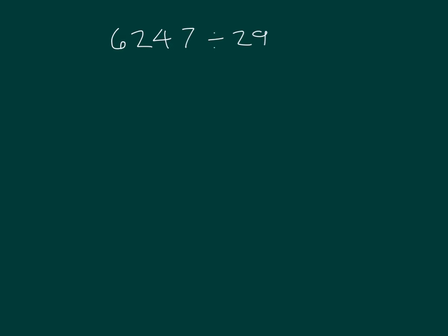Divide sixty-two-hundreds by twenty-nine. Show me how to estimate that. So sixty-two-hundreds divided by twenty-nine — we're looking at dividing by thirty. And in this case, we're looking at sixty-hundreds divided by thirty, which equals two-hundreds.